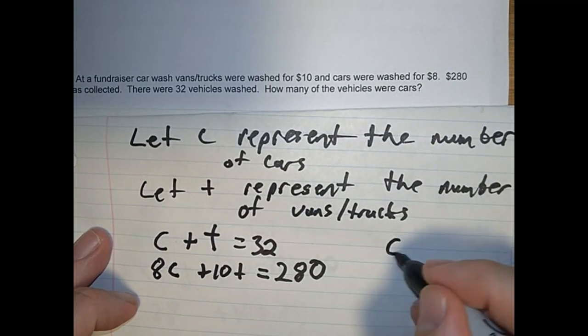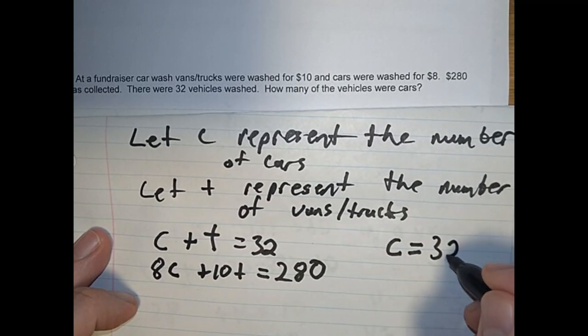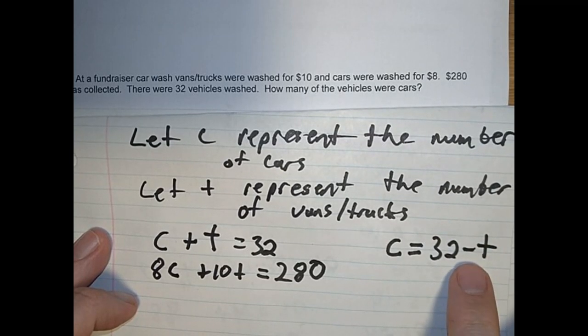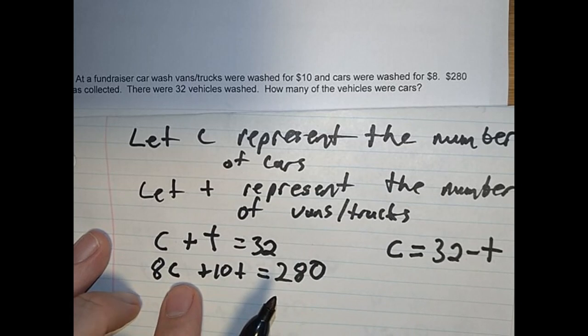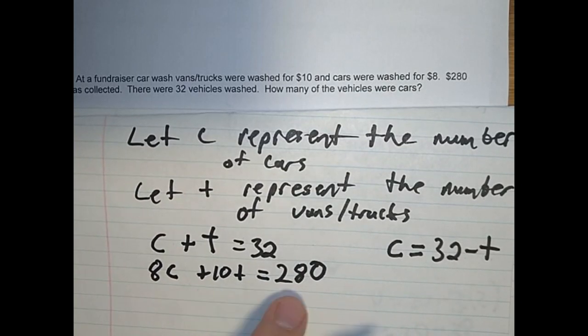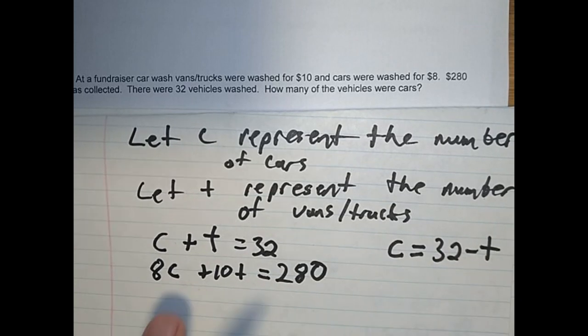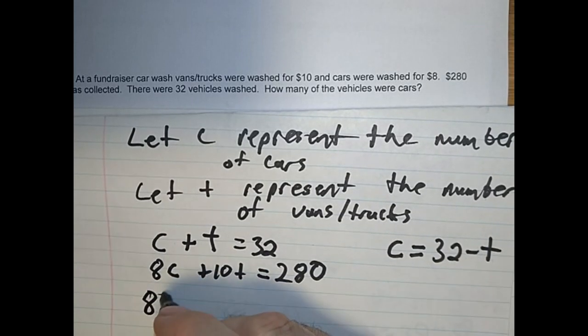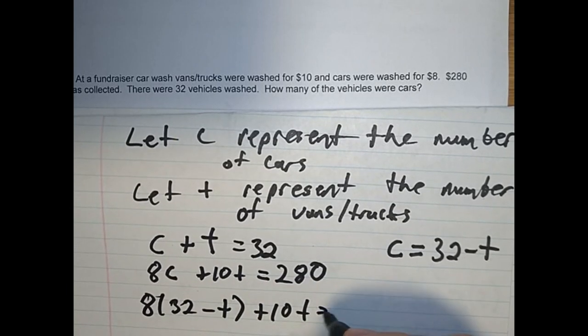Over on the side, I would write C equals 32 minus T. Now I'm just going to put that on the side. So this was $8 times the car plus $10 times the trucks is 280. Now I'd rearrange that one, and I'm going to sub this in for C. So 8 times 32 minus T plus 10T equals 280.